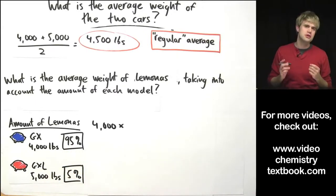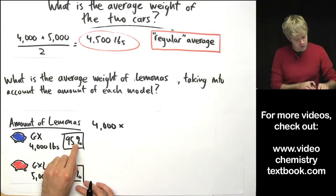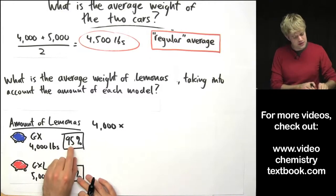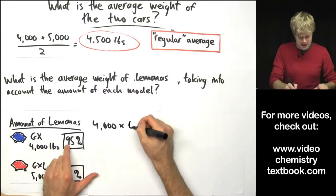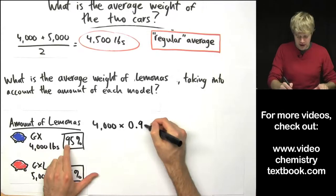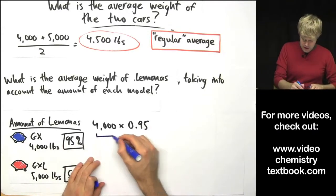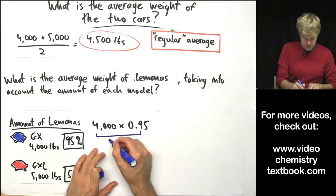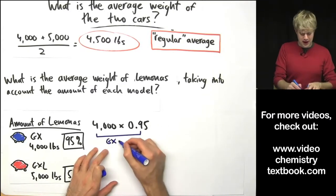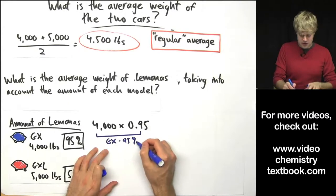I have to turn this percentage into a decimal. So the decimal point would be here. I move it two spaces to the left. So I'm going to get 0.95. Now, what this expression is here is this is the contribution from the GX that I have 95% of.